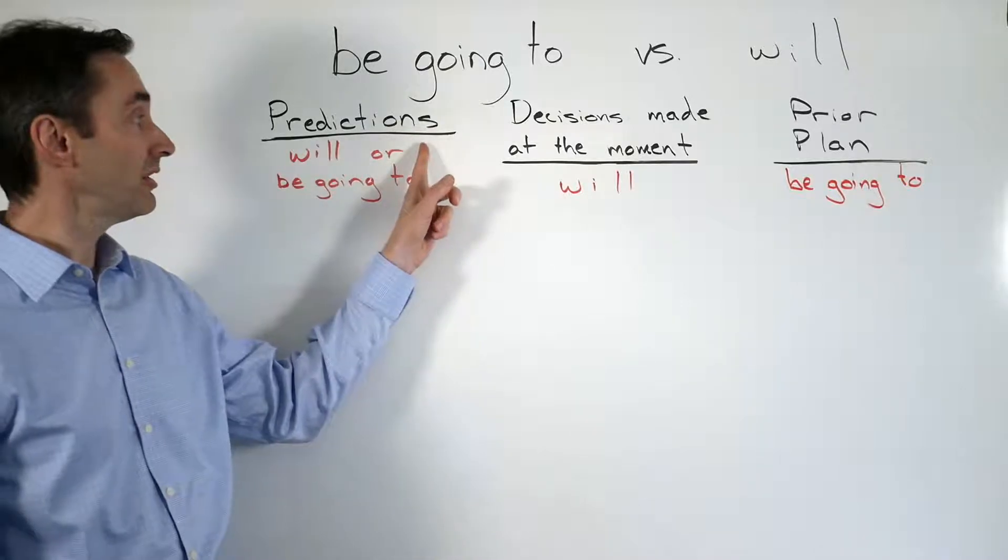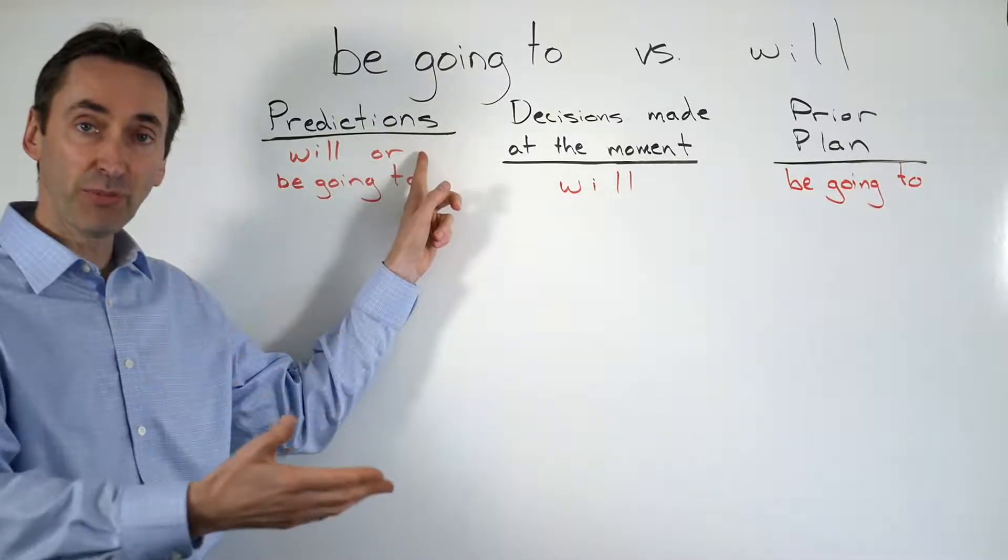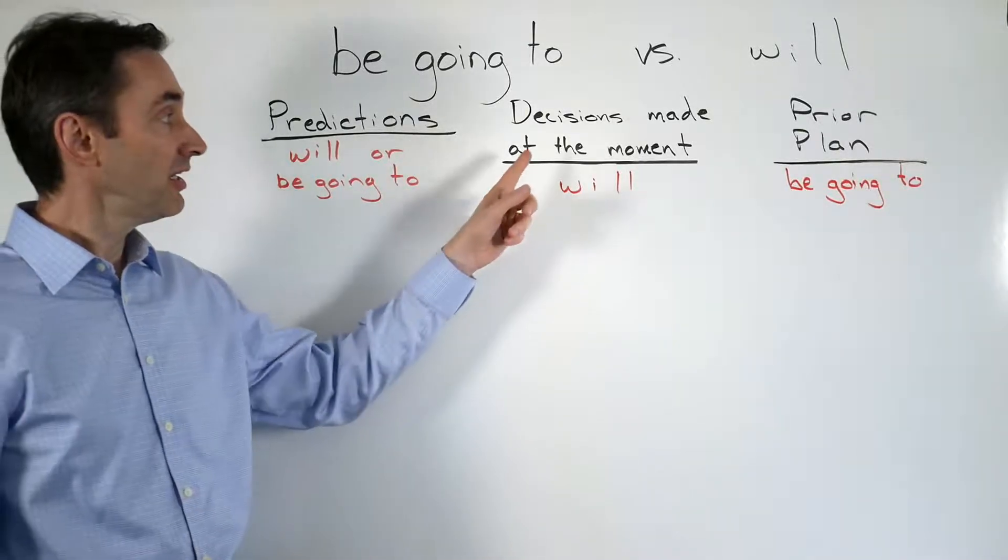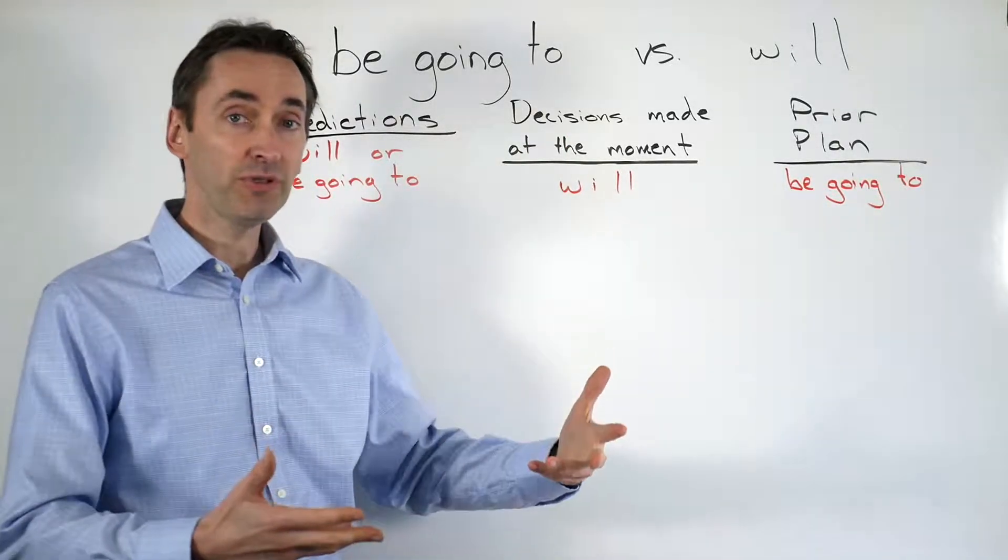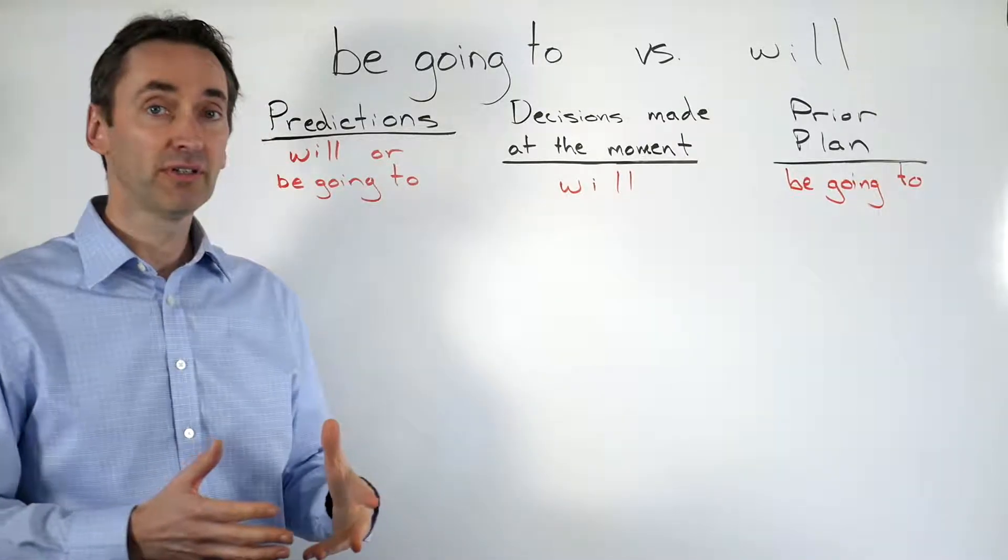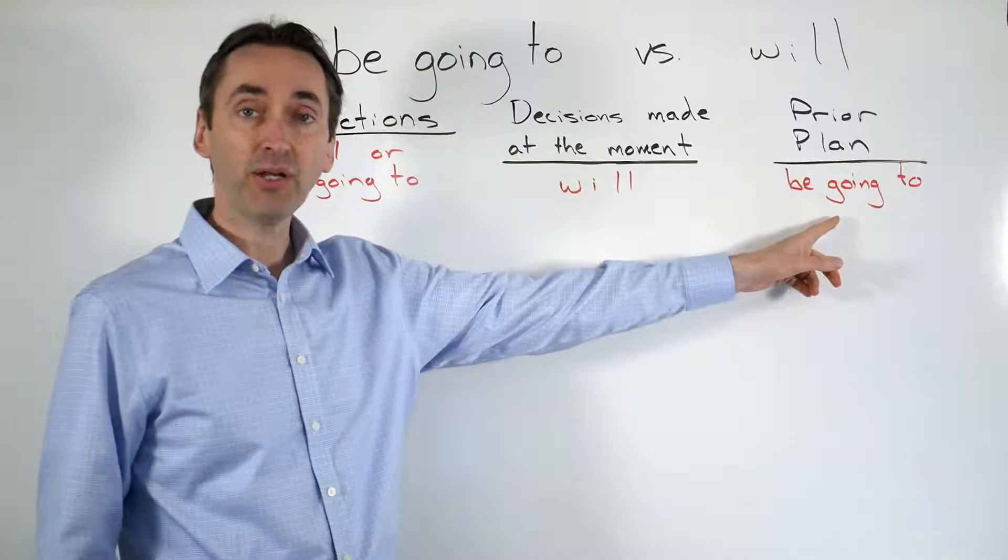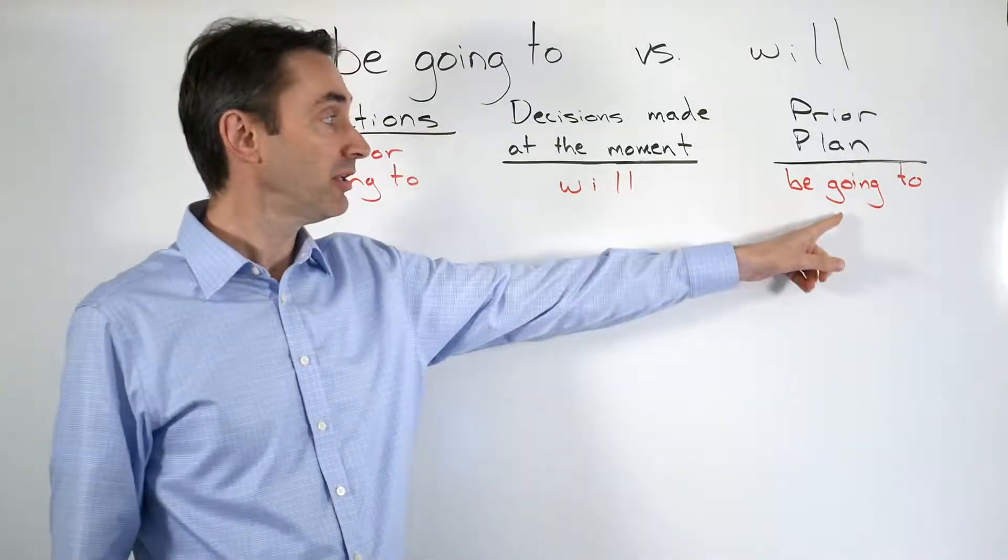First is predictions. If we're making a prediction about the future, we want to use will or be going to. Both are okay. If we're making a decision at the moment, right now, we use will. If we have a prior plan, we thought of this before, we use be going to.